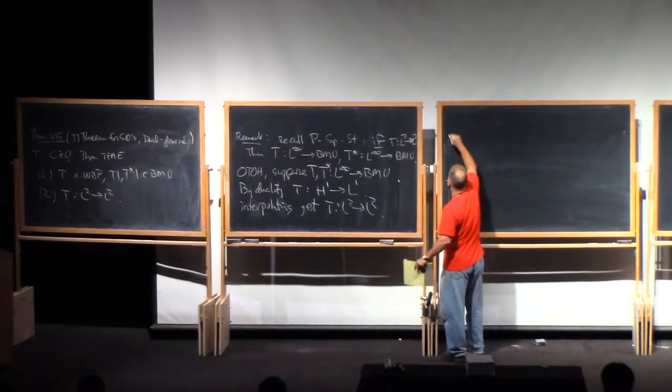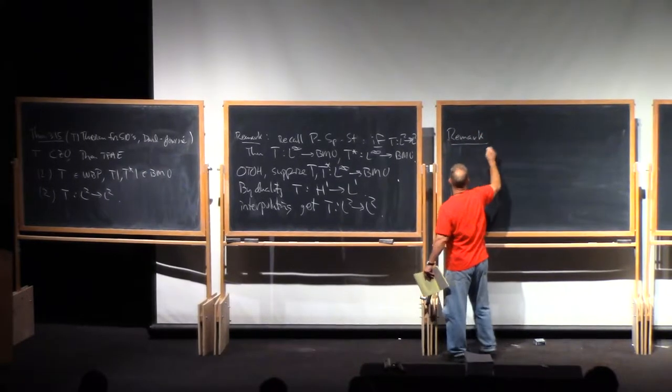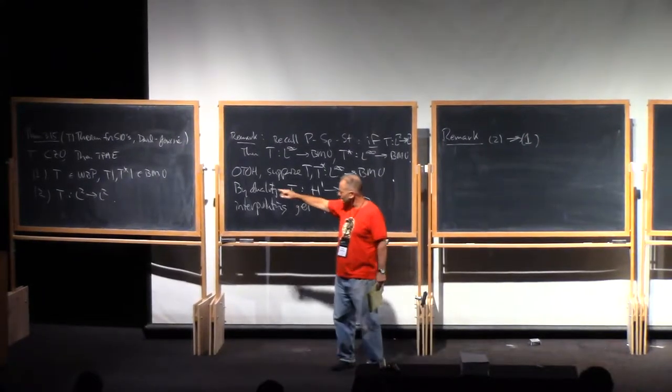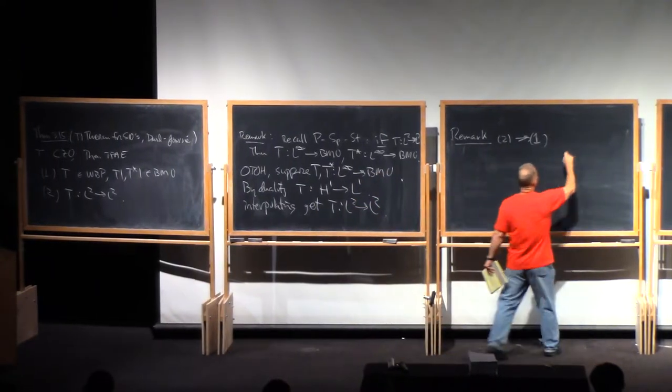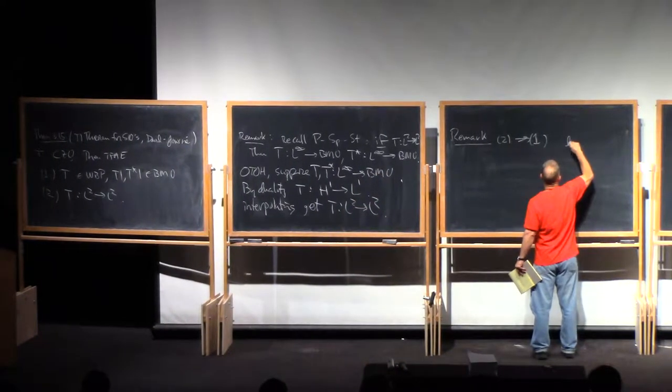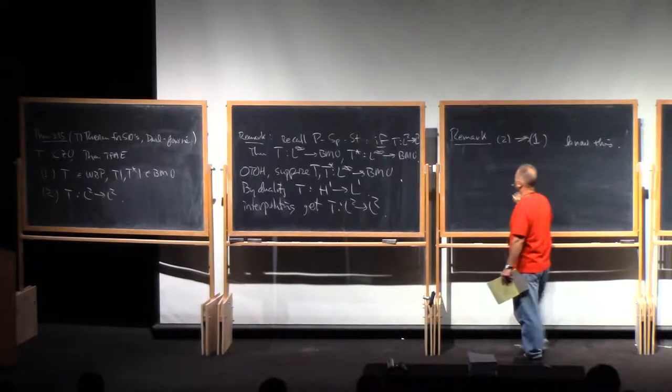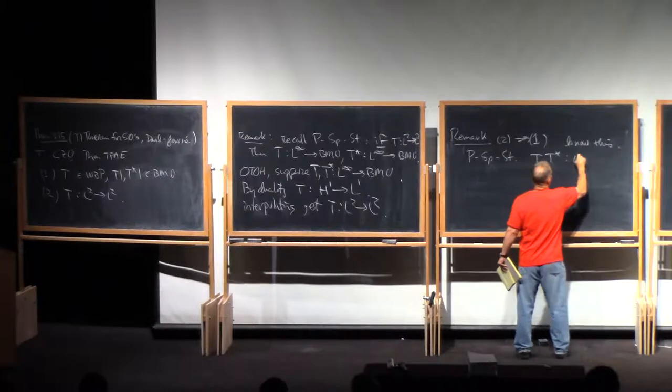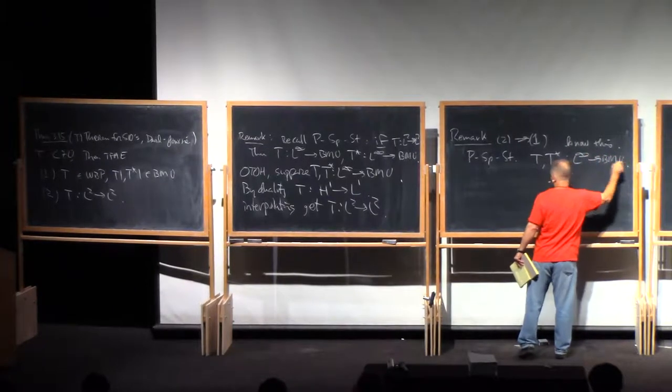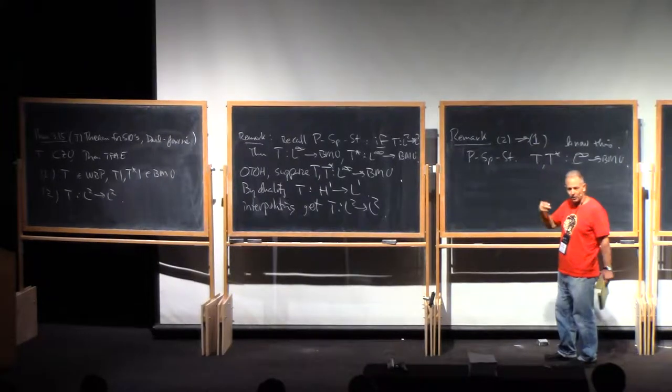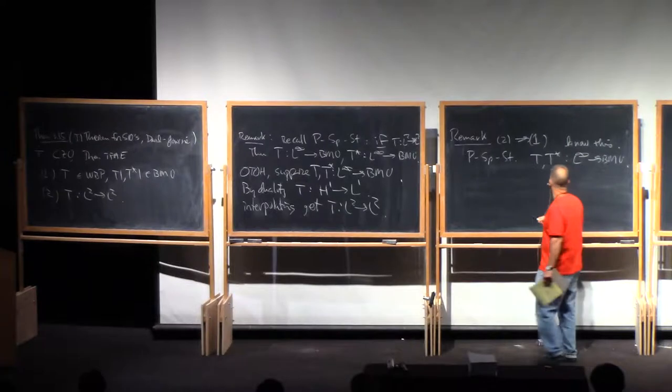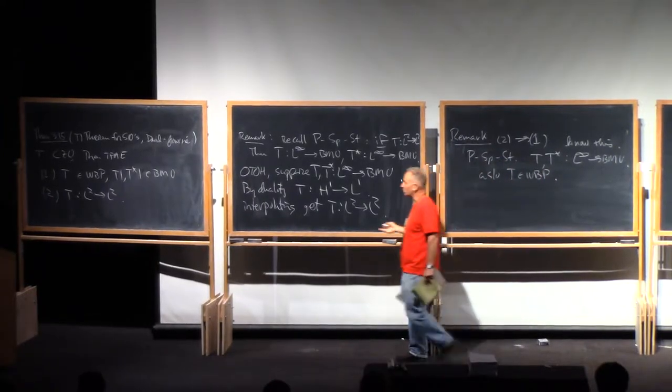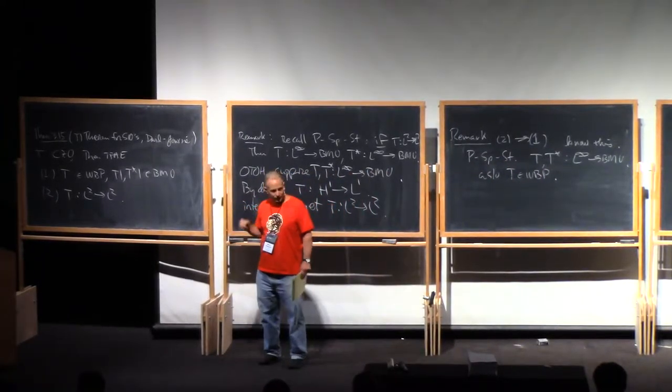So the second remark is that the direction 2 implies 1, that the L2-boundedness implies the first thing. We already know this. Because Petrie-Span-Stein tells us that T and T star map L infinity to BMO. So in particular, they map 1 into BMO, because 1 is in L infinity. And we've also seen that L2-boundedness trivially gives you weak-boundedness property just by Cauchy-Schwarz. So the real content of the theorem is to prove that 1 implies 2.